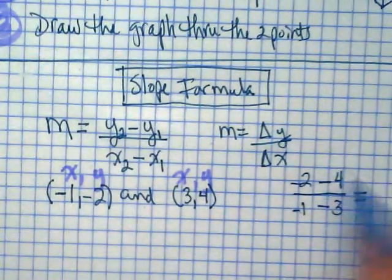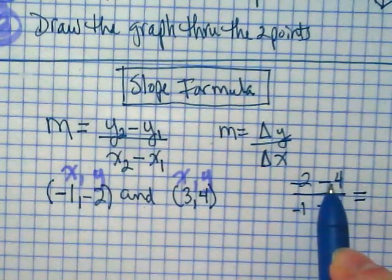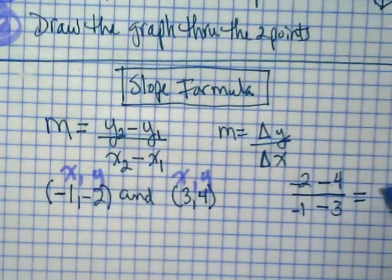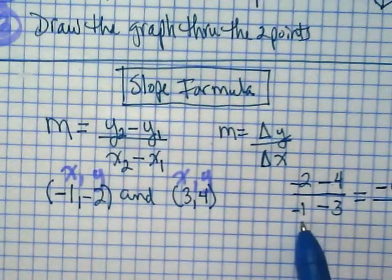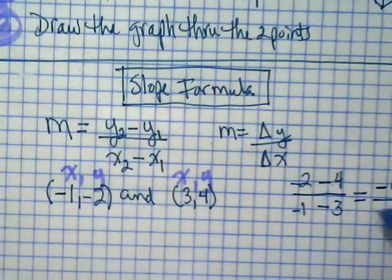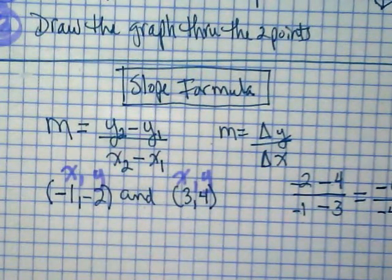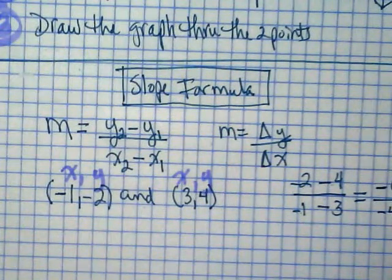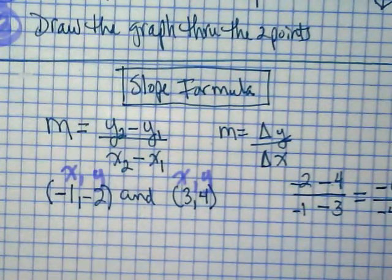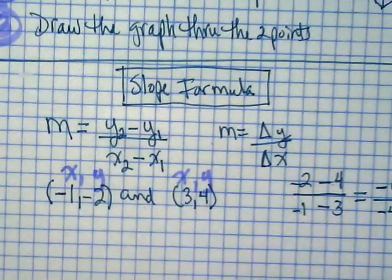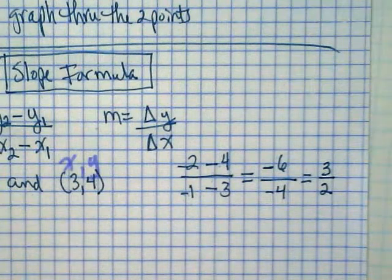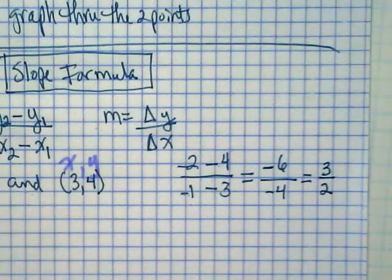Now I'm going to subtract. Negative 2 minus 4 is negative 6. Negative 1 minus 3 is negative 4. And that gives me negative over negative is positive, and 6 over 4 reduces to 3 over 2. I can't see. Nobody can see because I went off camera. Thanks for letting me know.